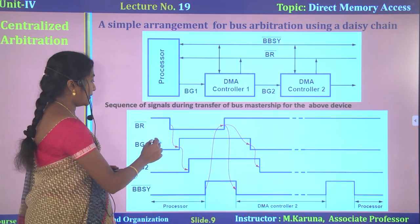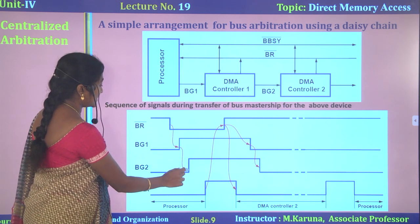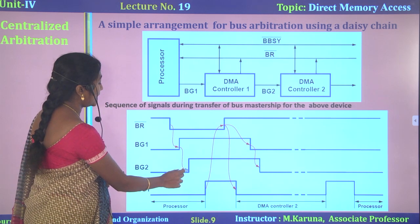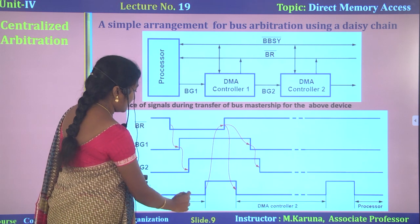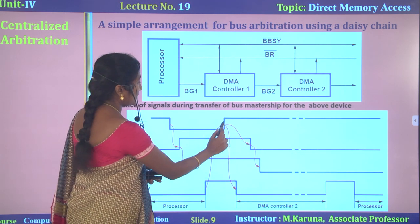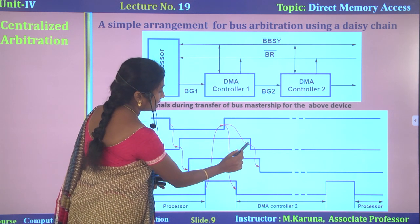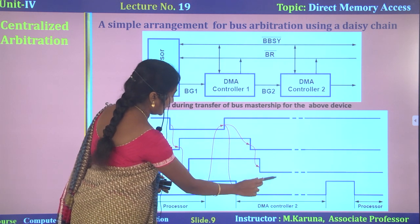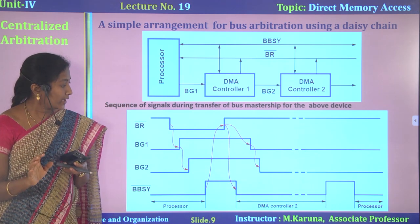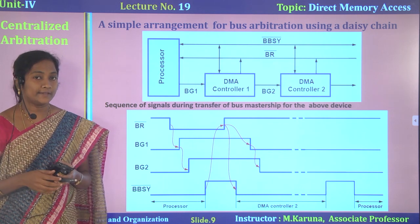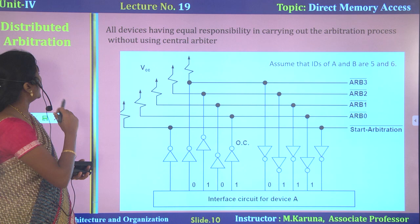These operations are performed repeatedly. After the bus request signal occurs, after some time the bus grant is released. Then bus grant 2 is sent by the processor. Whenever the bus is free, the request signal goes inactive, then the grant signal goes inactive, then grant 2 goes inactive. Likewise, control signals are transferred between DMA controller 2 and the processor.